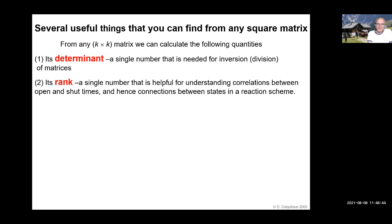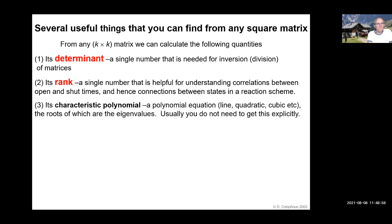You can find its rank, which is also a single number — that's helpful for understanding things like correlations between open and shut times in a single ion channel, and the connections between states in a reaction scheme. You can find its characteristic polynomial — a polynomial equation: a linear, quadratic, or cubic equation.